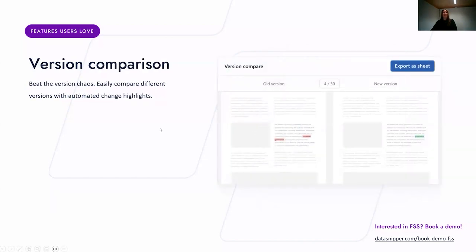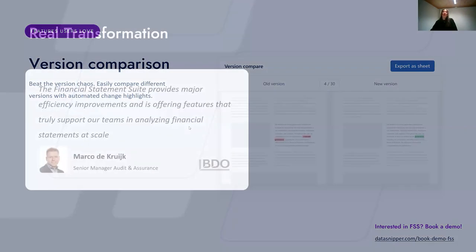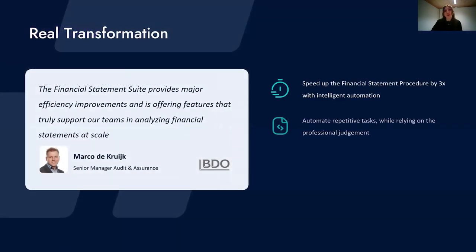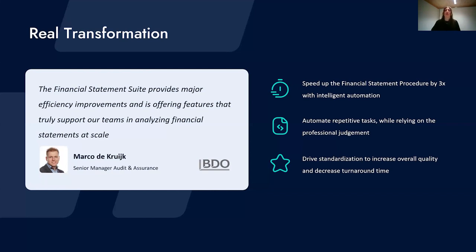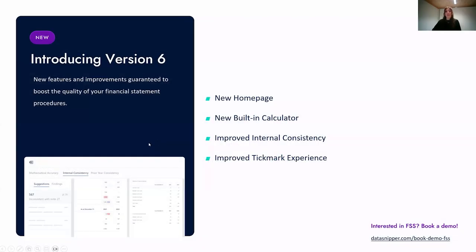Using version comparison, you can beat the version chaos — DataSnipper compares different versions of financial statements and automatically highlights the changes between versions. Overall, FSS will help you perform your financial statement procedures three times faster, automate repetitive tasks while relying on your professional judgment, and drive standardization to increase overall quality and decrease turnaround time.